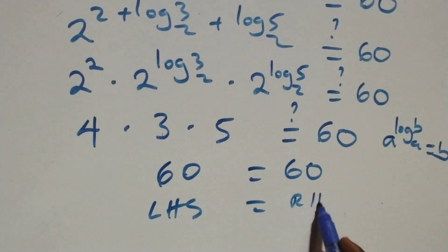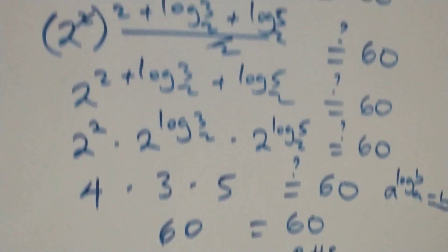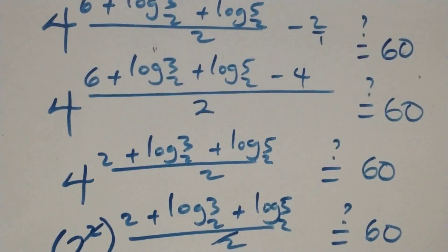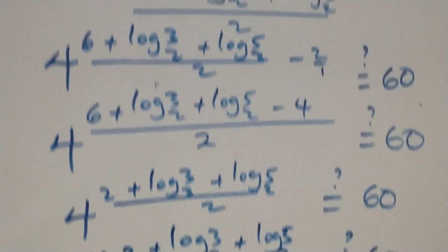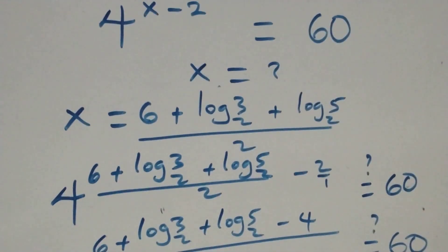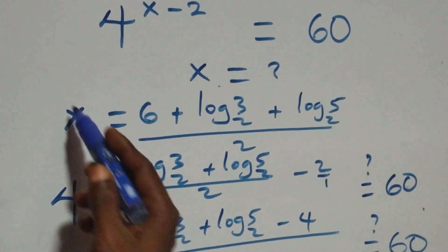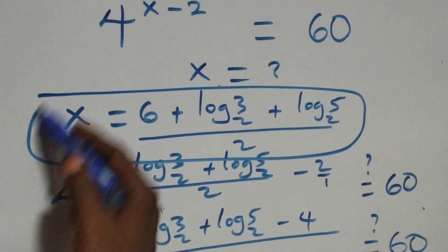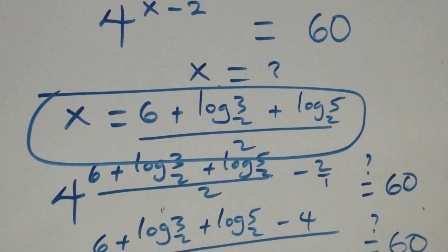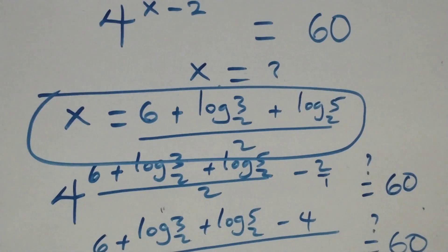Left hand side equals the right hand side. Therefore we conclude that x equals six plus log three base two plus log five base two, all over two satisfies this given problem. Thank you for watching, don't forget to subscribe for more videos and share this video — see you next class, bye for now.